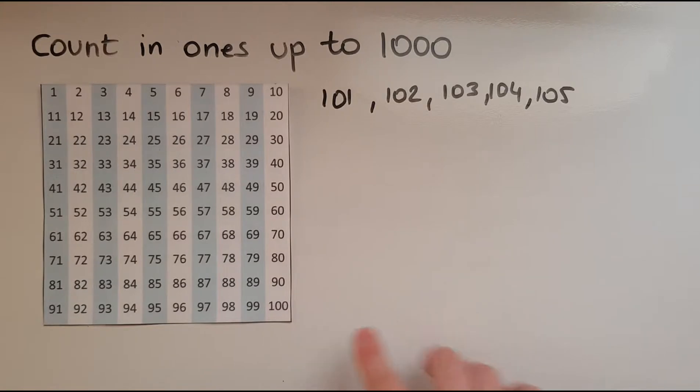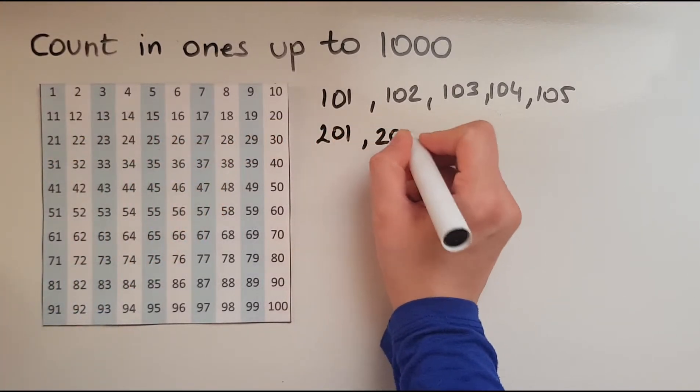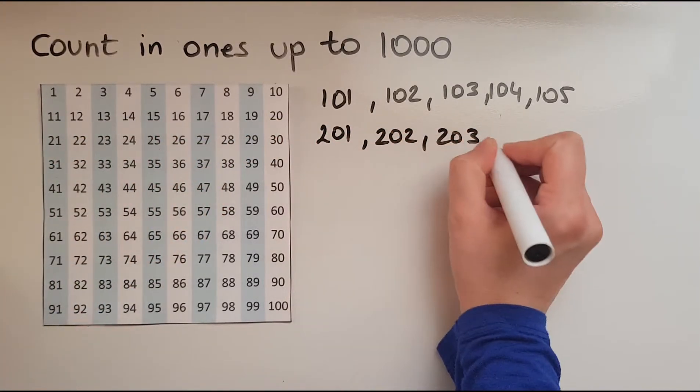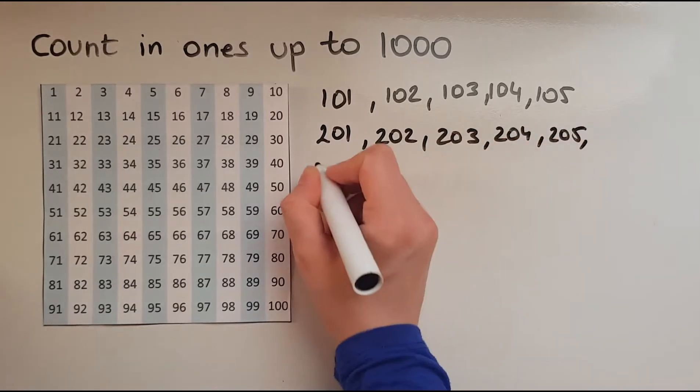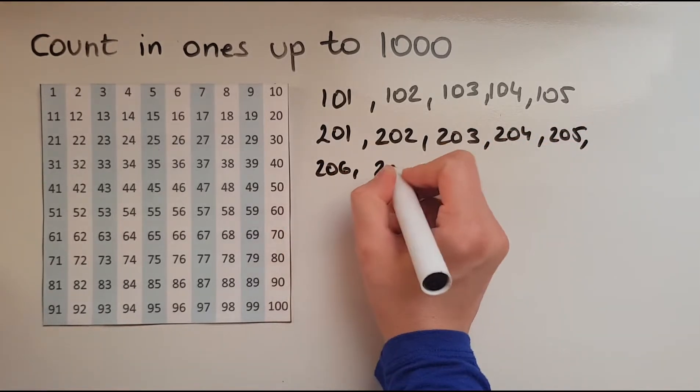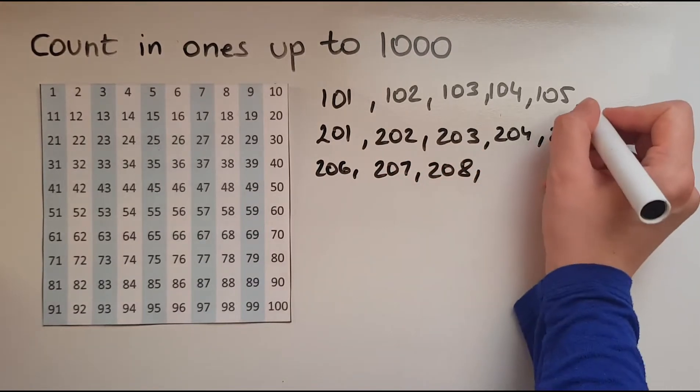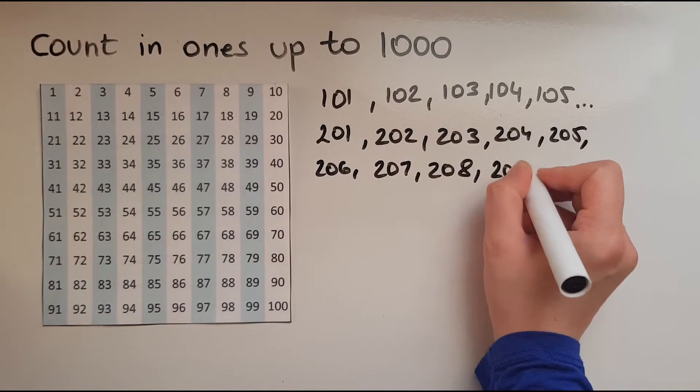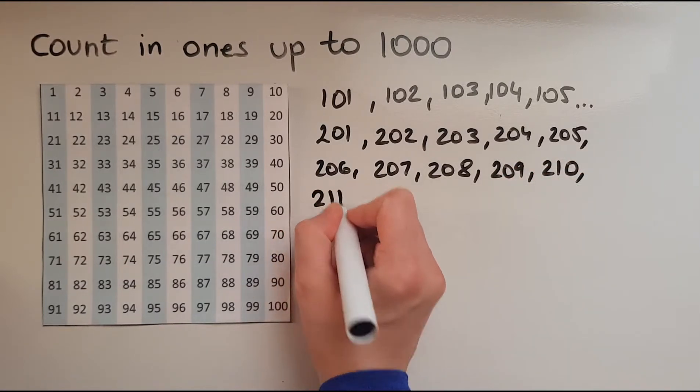So we did those up to 200. Then would come 201, 202, 203, 204, 205, 206, 207, 208, 209, 210 then 211.